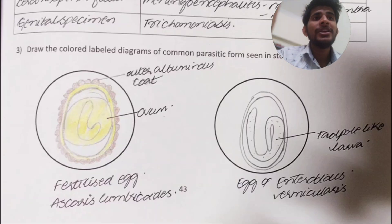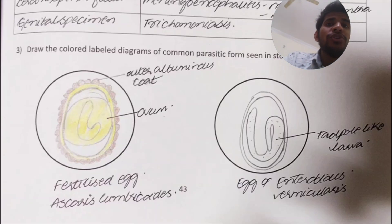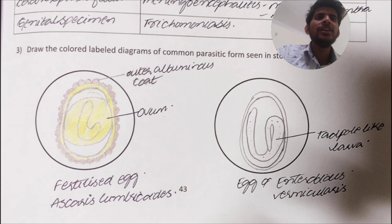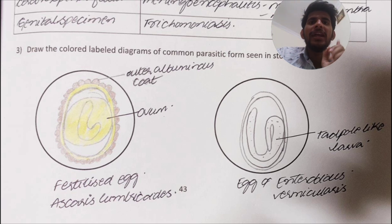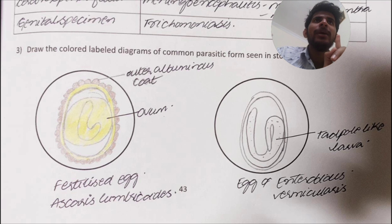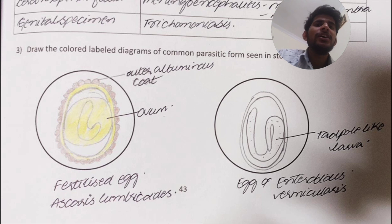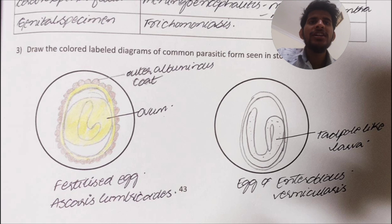In practical examination you need to draw diagrams. You can draw the ones shown. Also, regarding bile stain and non-bile stain: non-bile stained is Giardia lamblia, and bile stained is Ascaris lumbricoides.